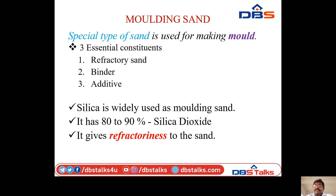Next, moulding sand. Moulding sand is most commonly used for making all types of moulds, irrespective of whether they are used for producing castings of ferrous or non-ferrous metals. Sand is used for making moulds. The three essential constituents of moulding sand are: refractory sand, binder, and additives. Silica is widely used as moulding sand — it has 80–90% silicon dioxide, which gives refractoriness to the sand.